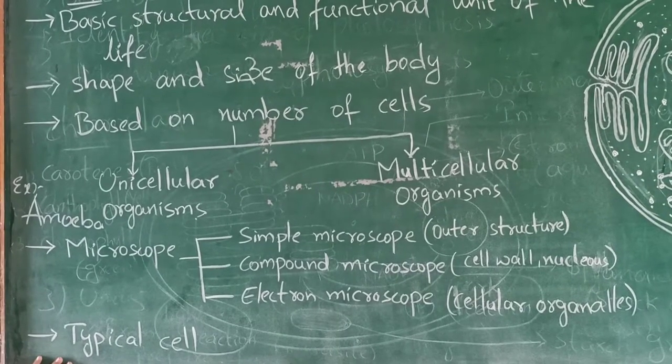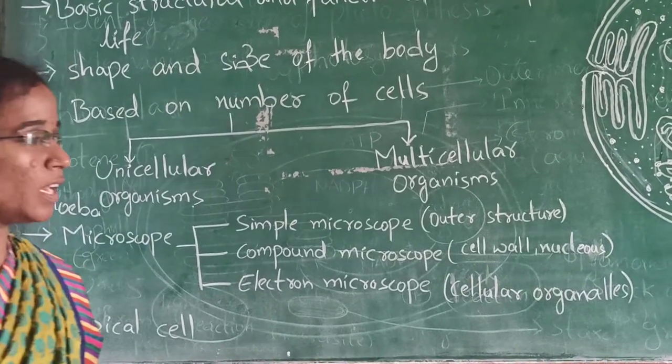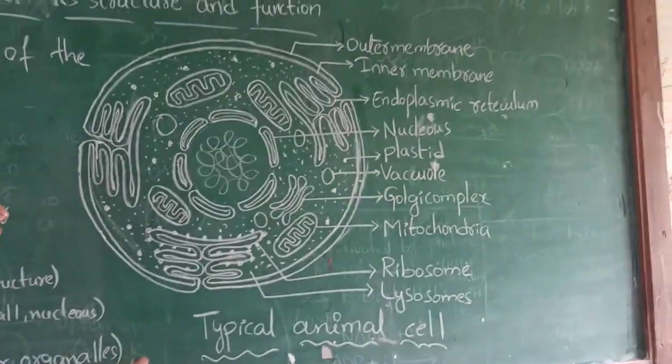If plant cell is having total number of cell organelles, that is a typical plant cell. We have a typical animal cell structure here.